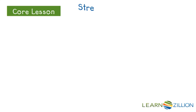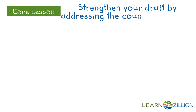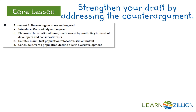The next thing I need to do is strengthen your draft by addressing the counter argument. We want to make sure that if the developer is saying 'but what about...' we've already addressed it, and that we are fully persuading our audience of our point. So we're going to work through this counterclaim: the developer might say it's just a population relocation, this is not my problem, they're still abundant.